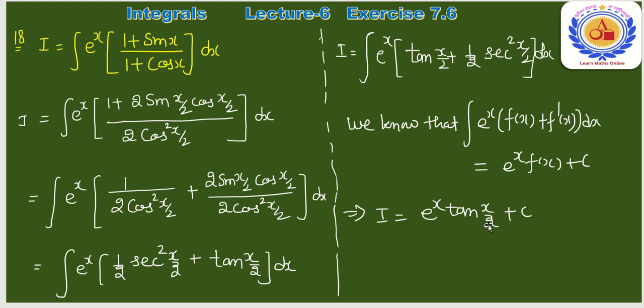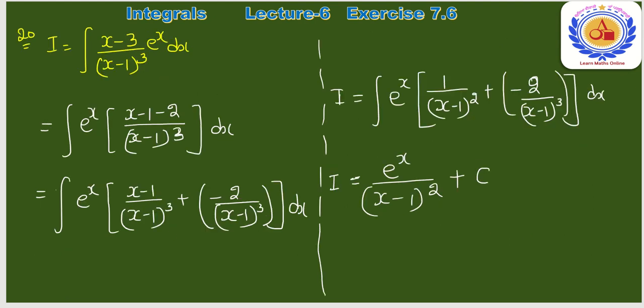Question number 20: ∫[(x−3)/(x−1)³]·eˣ dx। जहाँ भी eˣ दिखे, chances हैं कि यह form बन सकती है। (x−3) को (x−1) − 2 लिखकर separate करते हैं।